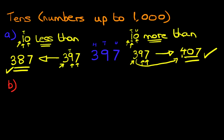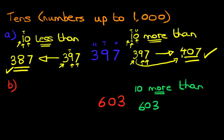Suppose now we have the number 603. We've got 603. So on this side, we're going to do 10 more than. What is 10 more than 603? Again, let's write the number down, 603. Are we going to count forwards or backwards? We're doing more than, so therefore we're going to count forwards.